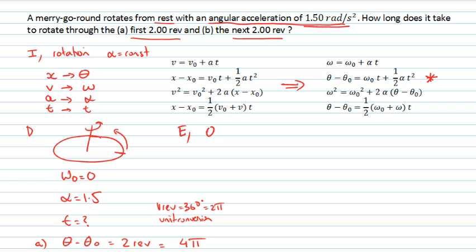So if we take that equation there, θ - θ₀ = ω₀t + ½αt². If I think about this, my initial velocity is zero, so this term here is going to disappear. And I can just solve for the time now, rearranging that equation.